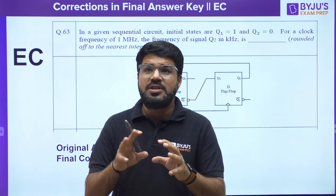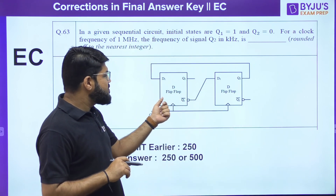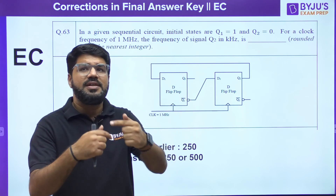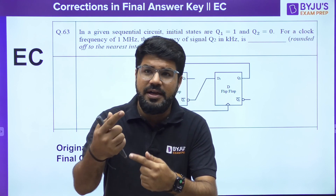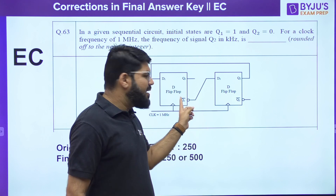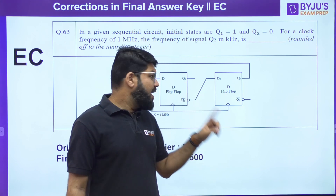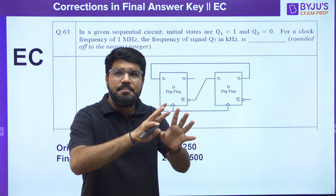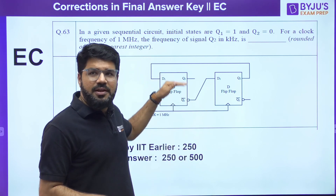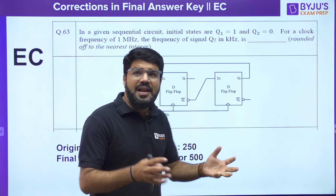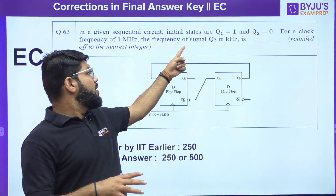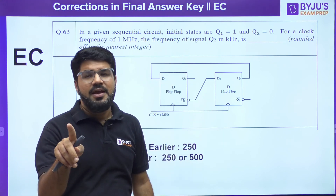One more question from EC — the confusion here is in terms of the diagram. The diagram shows a connection from a particular node with Q1-bar as well as a bubble. Several students thought it was Q1 itself. However, per standard books, a bubble represents logic LOW and a bar also represents LOW — a bubble and a bar together do not cancel each other, they both represent LOW. So every flip-flop has two outputs, Q1 and Q1-bar, and it has to obviously be Q1-bar.